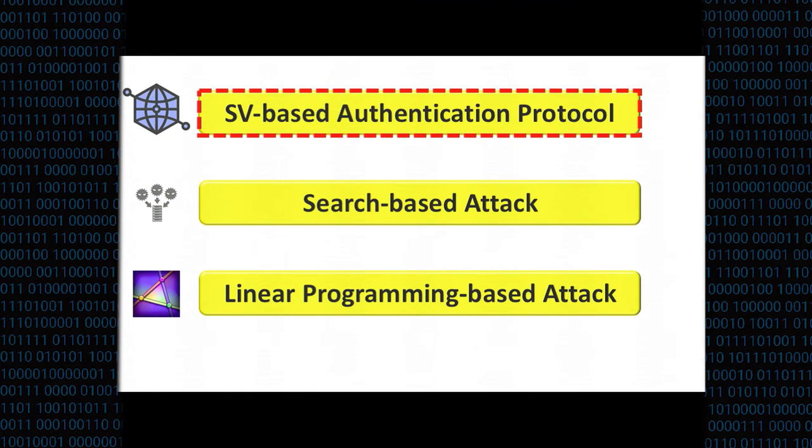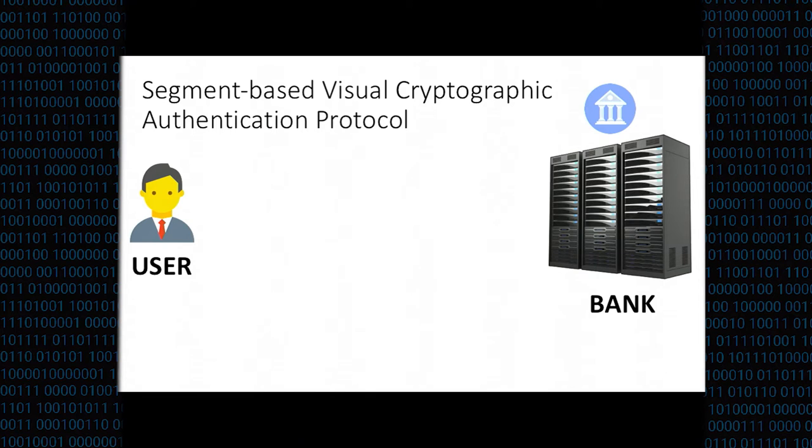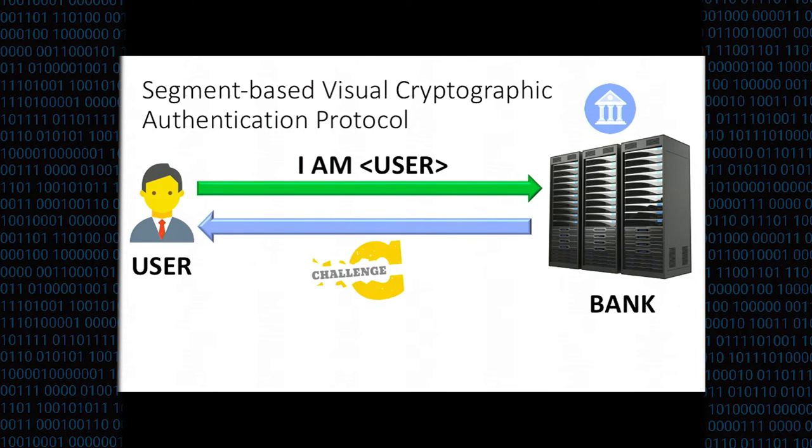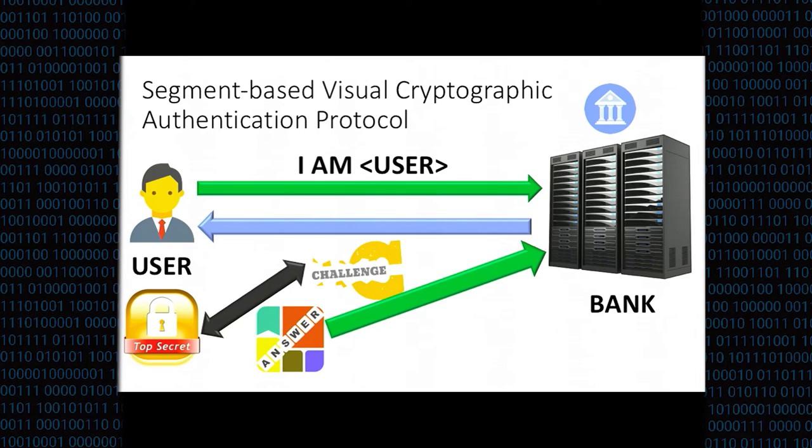This talk is divided into three parts. First, I will go over the framework of segment-based visual crypto authentication protocol. Here is the same scenario: there is a user and a bank in an environment where there is an untrusted computer. The user wants to request something, saying that I am a user. The bank replies with some challenge, and the user and the bank share a secret. The user applies the secret to the challenge and got some answer and replies the answer to the bank. The bank can determine whether to accept or deny this request.